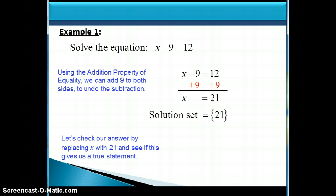Well, let's check our answer by replacing x with 21 and see if this gives us a true statement, since that's what it means for 21 to be a solution to the equation. So the original equation, if I replace x with 21, I end up with 21 minus 9 equals 12. So is that a true statement? Well, if you subtract 9 from 21, you get 12, and 12 is equal to 12, so 21 is a solution.